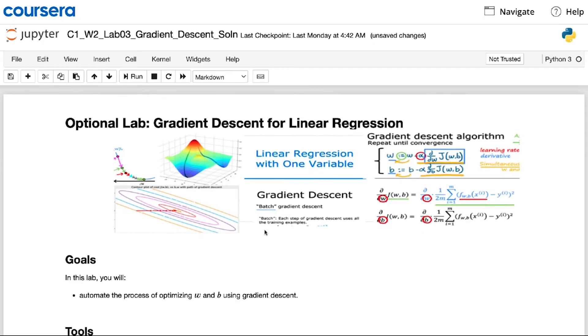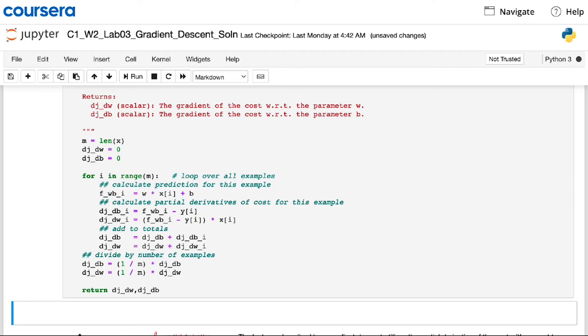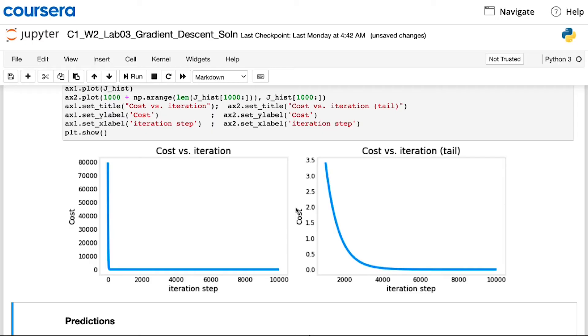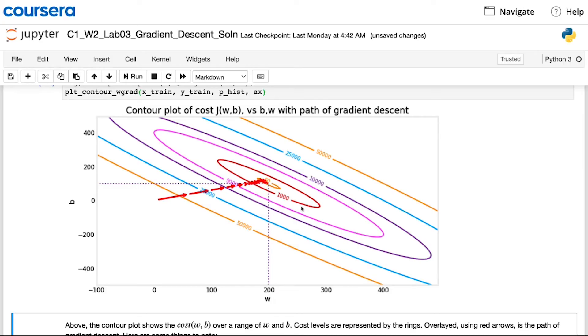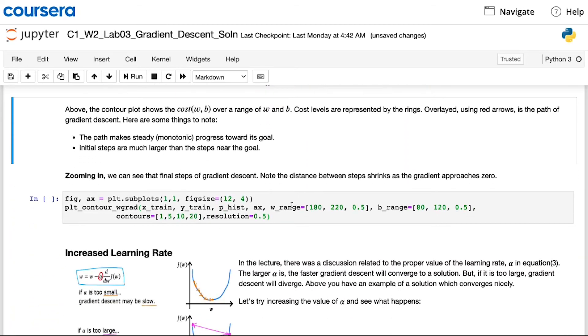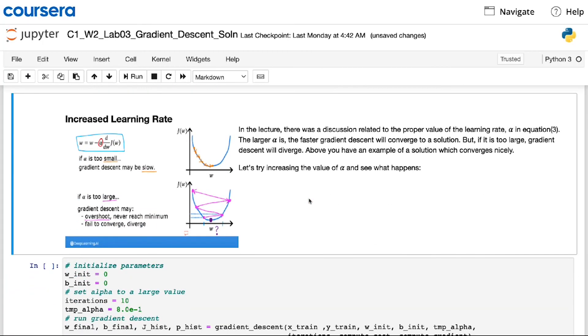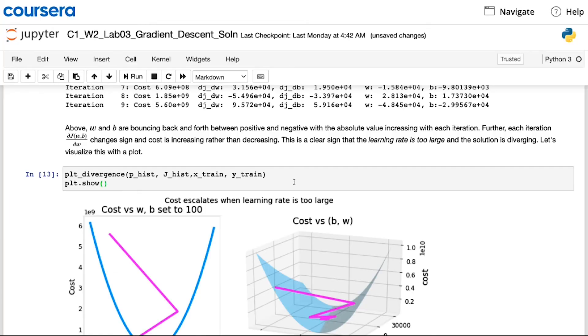In the optional lab that follows this video, you'll see a review of the gradient descent algorithm as well as how to implement it in code. You'll also see a plot that shows how the cost decreases as you continue training more iterations, and a contour plot showing how the cost gets closer to the global minimum as gradient descent finds better values for the parameters w and b. To do the optional lab, you just need to read and run this code. You won't need to write any code yourself. I hope you take a few moments to do that and become familiar with the gradient descent code, as this will help you implement similar algorithms in the future.